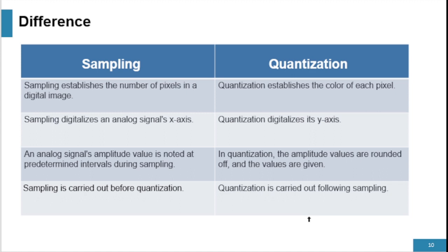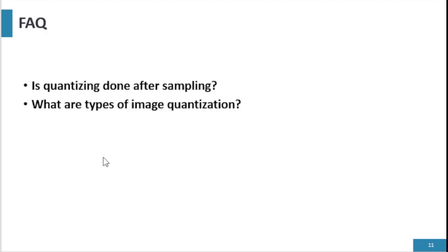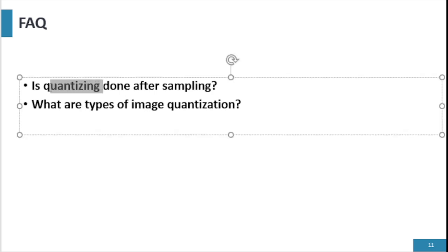Sampling determines the number of pixels in the digital image, while quantization is a process of assigning color to each pixel. Quantization is carried out on the y-axis, while sampling is carried out on the x-axis. Is quantization done after sampling? Yes — quantization is done after sampling. Through the process of quantization, a real-valued sampled image is converted to one that only accepts a limited set of distinct values, and image amplitude values are digitalized. So first we determine the number of pixels, then we assign color to each pixel.